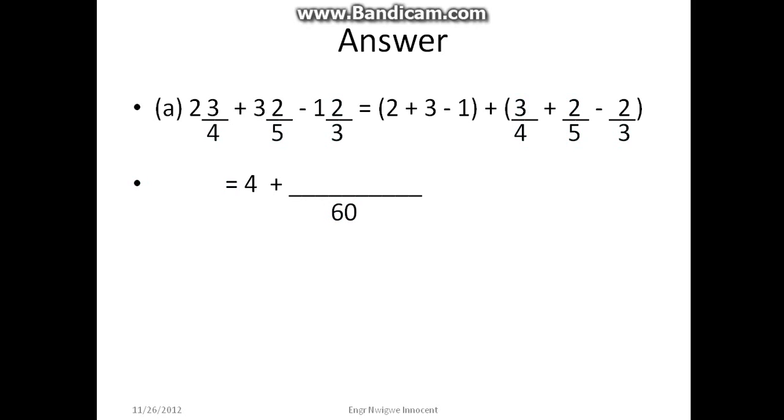4 divided by 60 gives us 15, 15 times 3 is 45. 5 divided by 60 gives us 12, 12 times 2 is 24. 3 divided by 60 gives us 20, 20 times 2 is 40. The numerator is 45 + 24 - 40 over 60. This gives us 4 29/60.